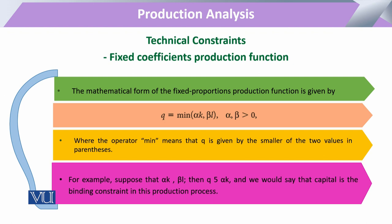In mathematical form, the production function is written as: Q is a function of capital and labor, where Q equals the minimum of capital divided by alpha and labor divided by beta. Capital and labor have their particular elasticities of production given by alpha and beta. The key unique aspect here is the minimum operator — whichever fixed combination of capital and labor is set must be maintained throughout the production function whenever we scale it up.